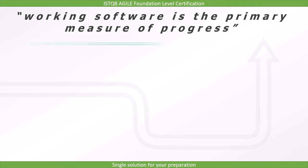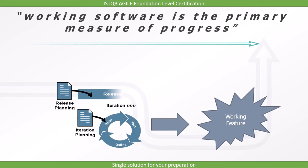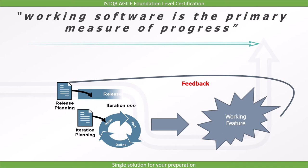The seventh principle is: working software is the primary measure of progress. The primary focus of each iteration is to deliver working software. By seeing the working software, the customer can provide feedback — not by seeing a progress report. Therefore, working software is the primary measure of progress.